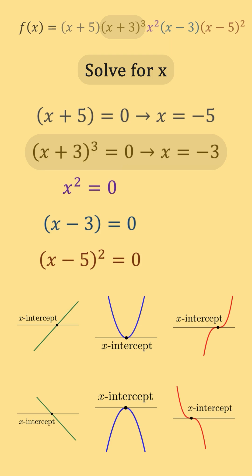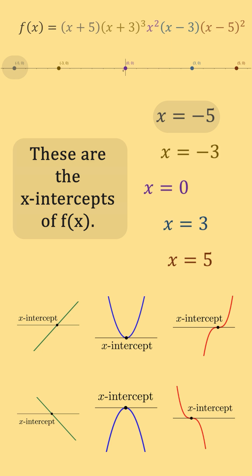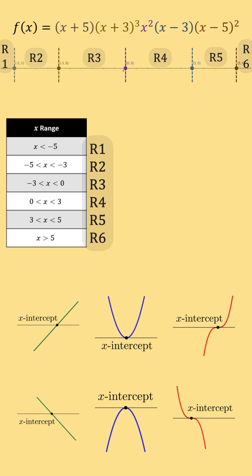Negative 5, negative 3, 0, 3, and 5 all make a factor of f(x) equal 0, and so these are points where f(x) crosses the x-axis, our x-intercepts. These 5 x-intercepts subdivide the x-axis into six different ranges.